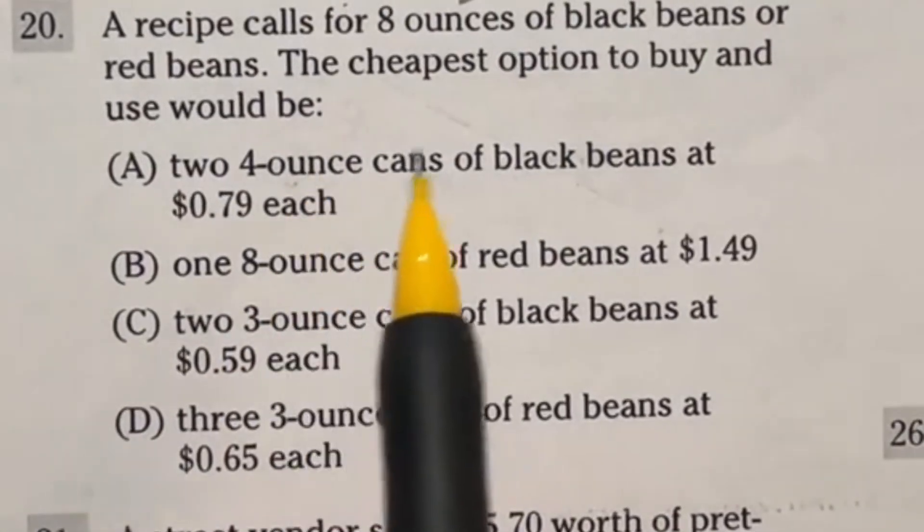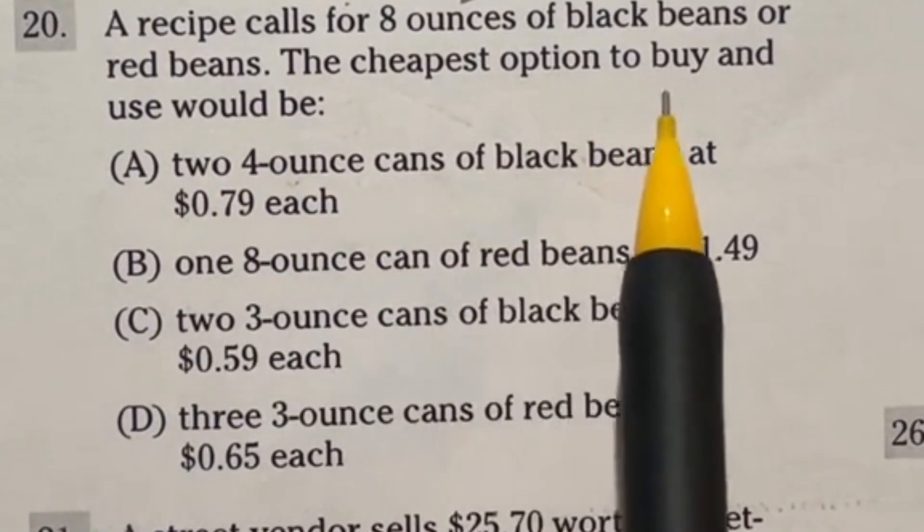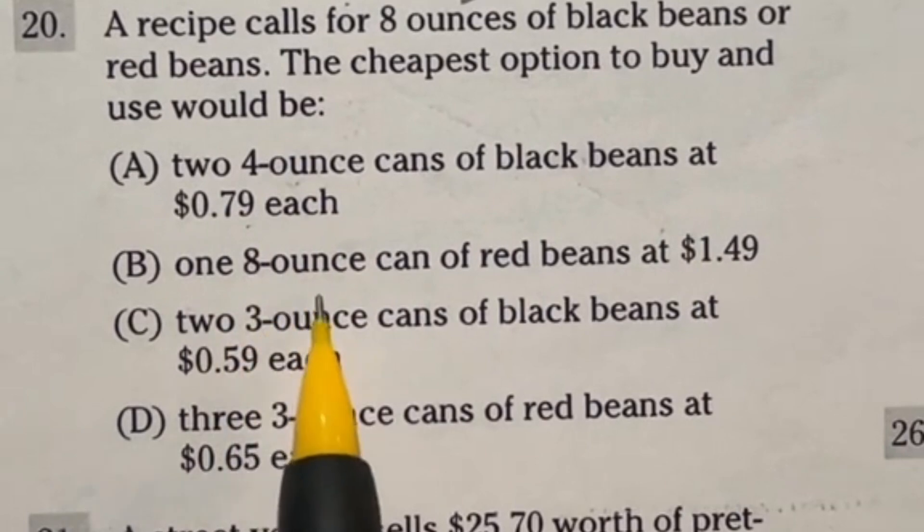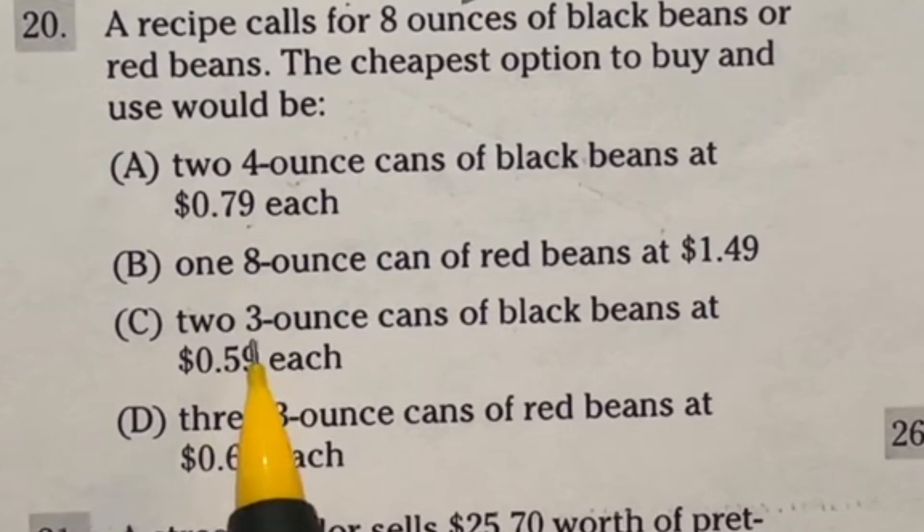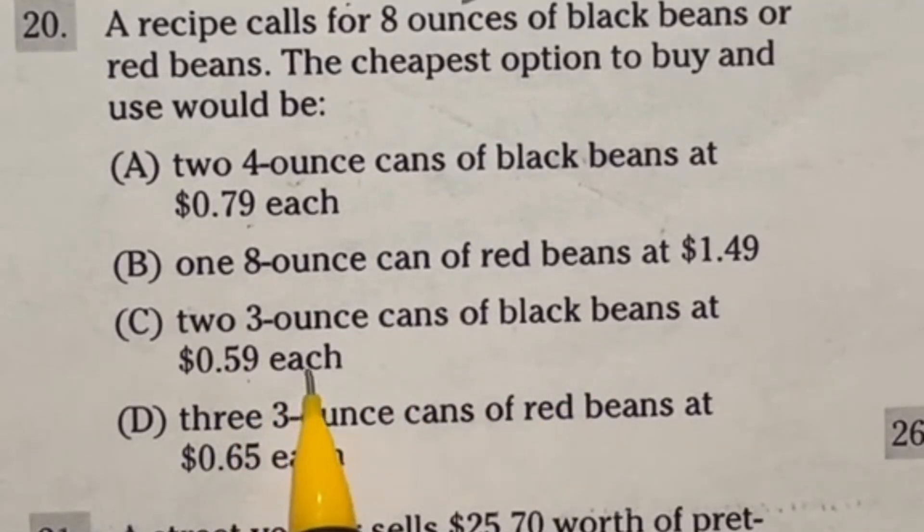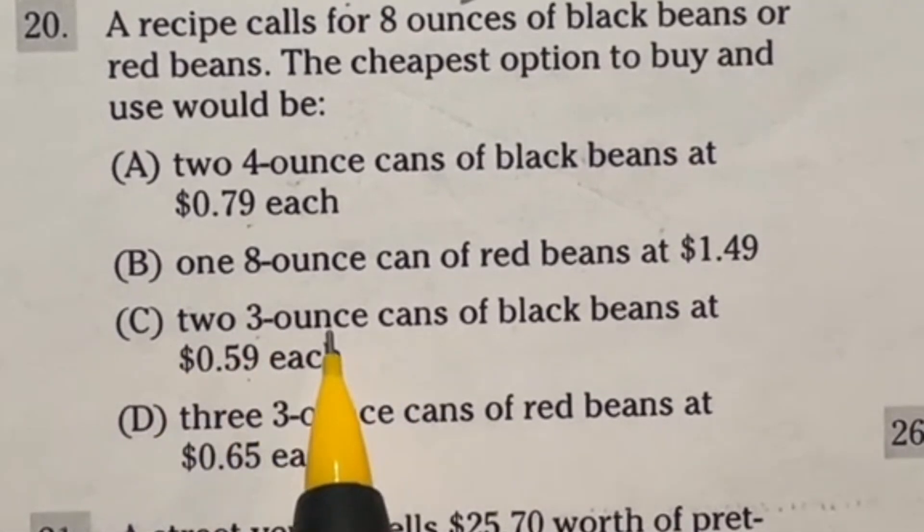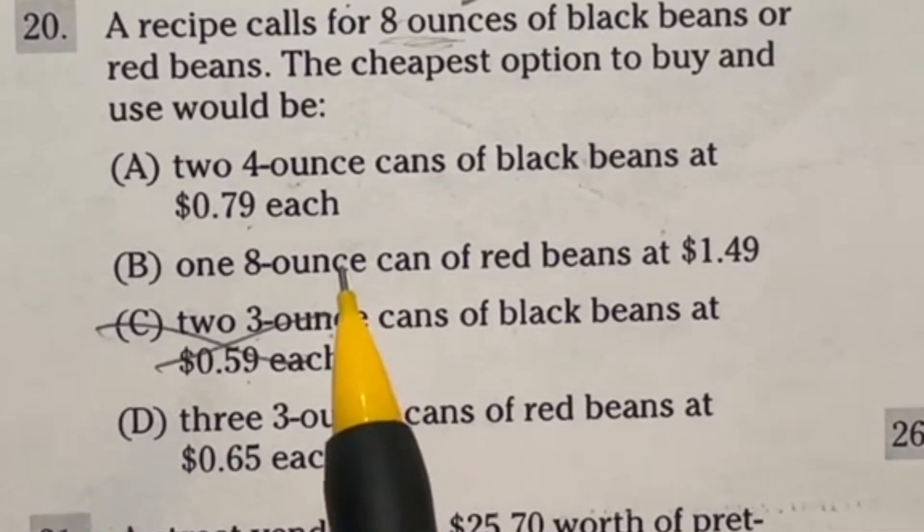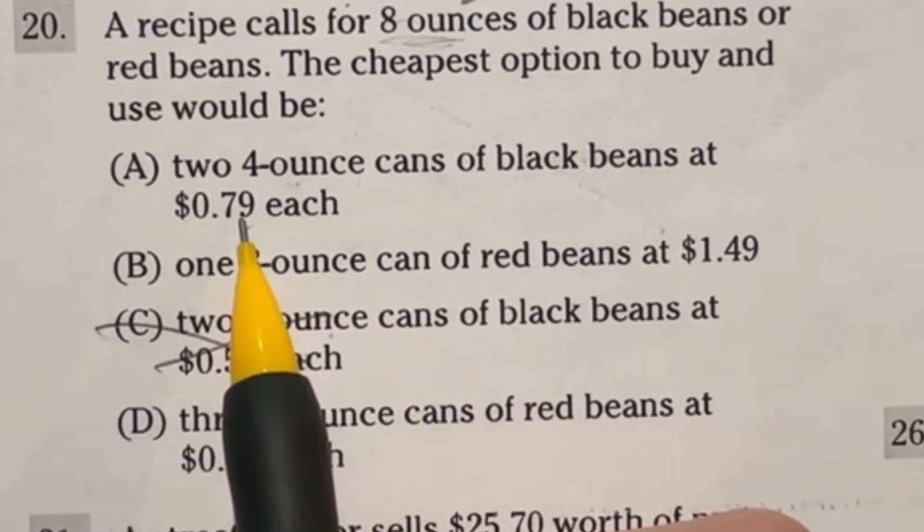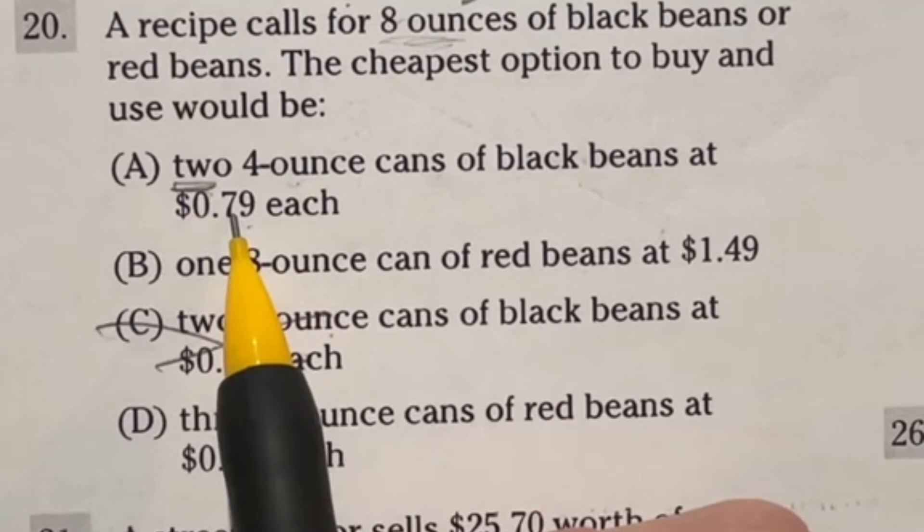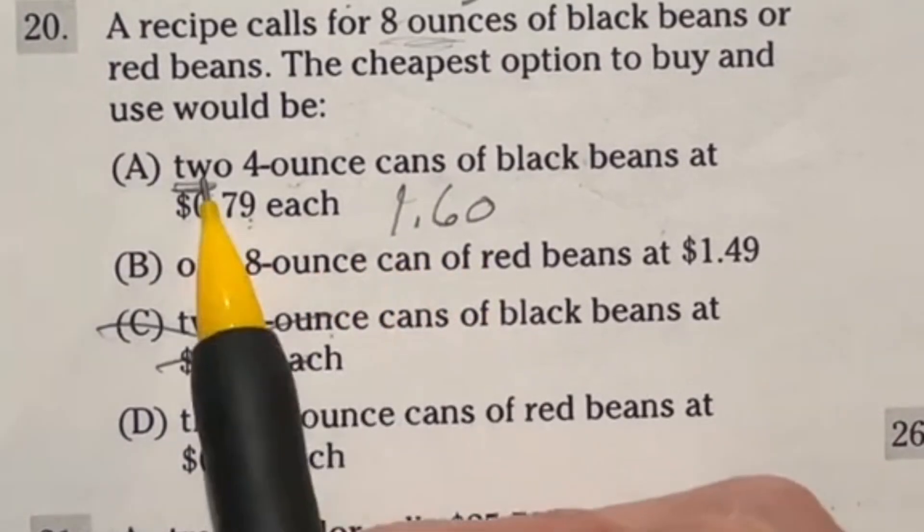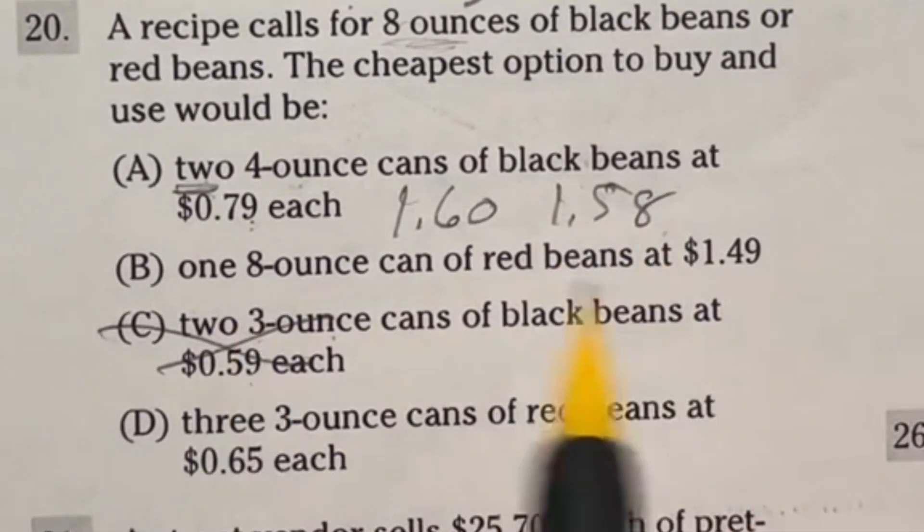Beans, beans, the magical fruit. It says a recipe calls for 8 ounces of black beans or red beans. The cheapest option to buy and use would be which one? It says two 4-ounce cans of black beans at 79 cents each. One 8-ounce can of red beans at $1.49. Two 3-ounce cans of black beans at 59 cents each, and three 3-ounce cans of red beans at 65 cents each. So right off the bat, two 3-ounce cans would only give us 6 ounces, but we need 8. So C is out. Now looking at the rest of these, they all seem a little bit more viable. Right here, let's take a look. If I do 79 cents each and I'm doing 2 of these, I'm going to think of this as 80 cents, which would be a dollar 60 when doubled, and then subtract the 1 cent for each of the two, giving me instead $1.58. Now this one's at $1.59, so that's already cheaper than the $1.58.